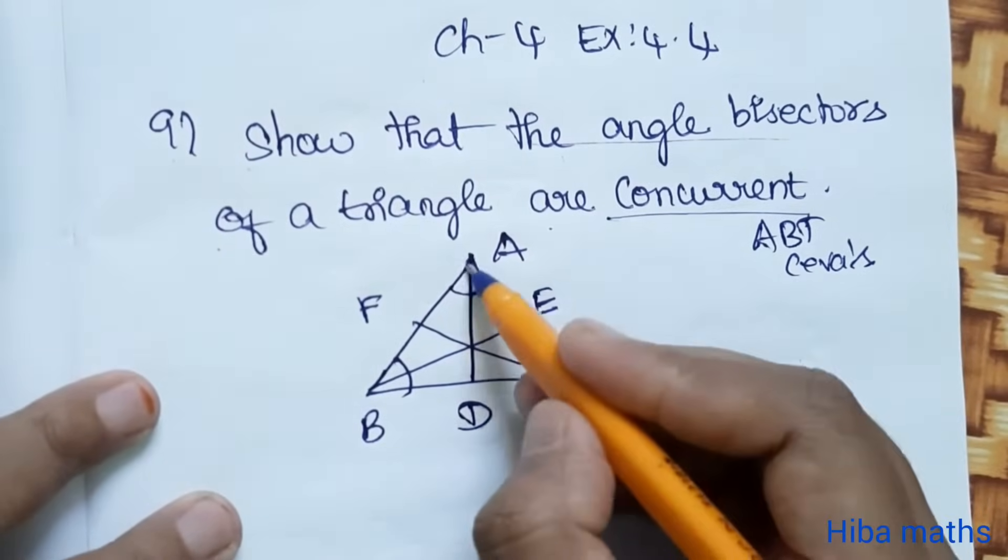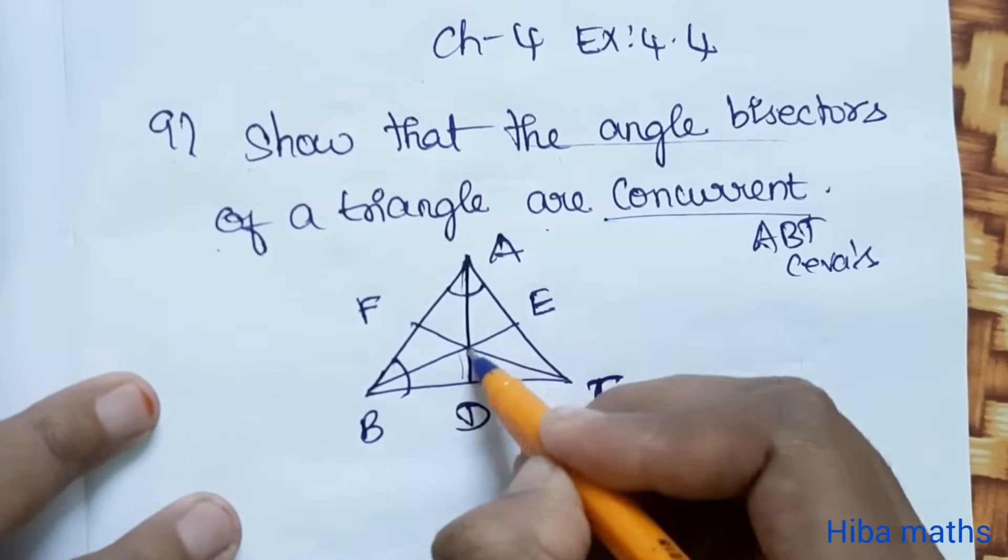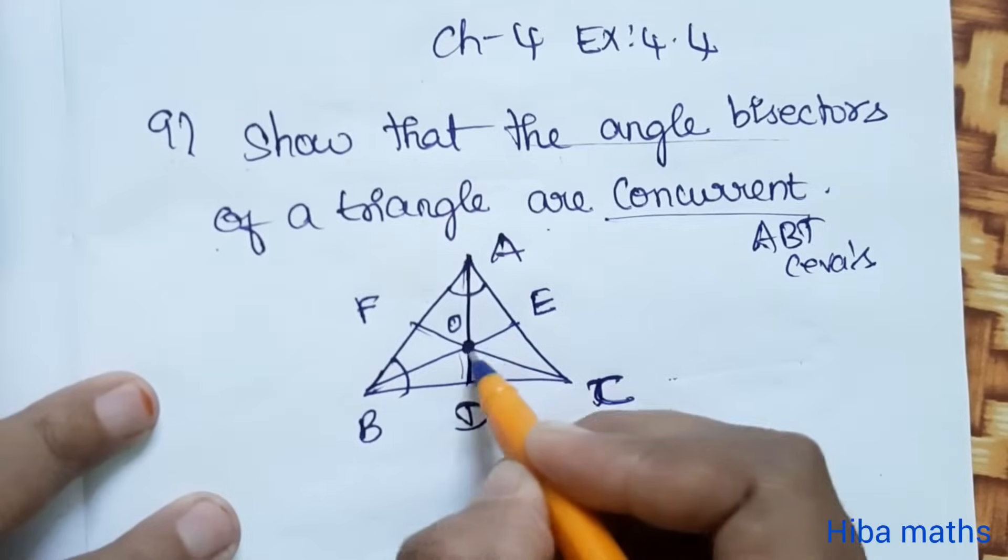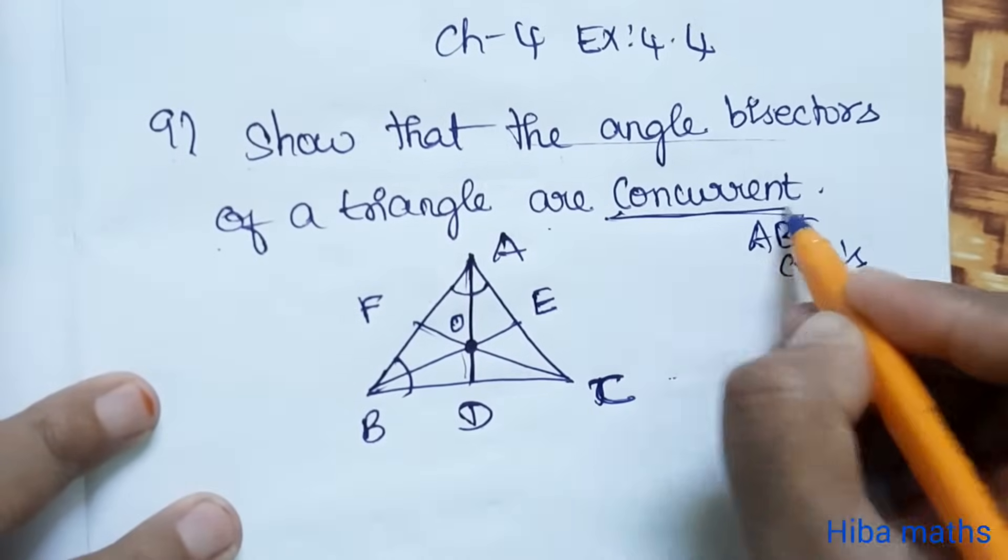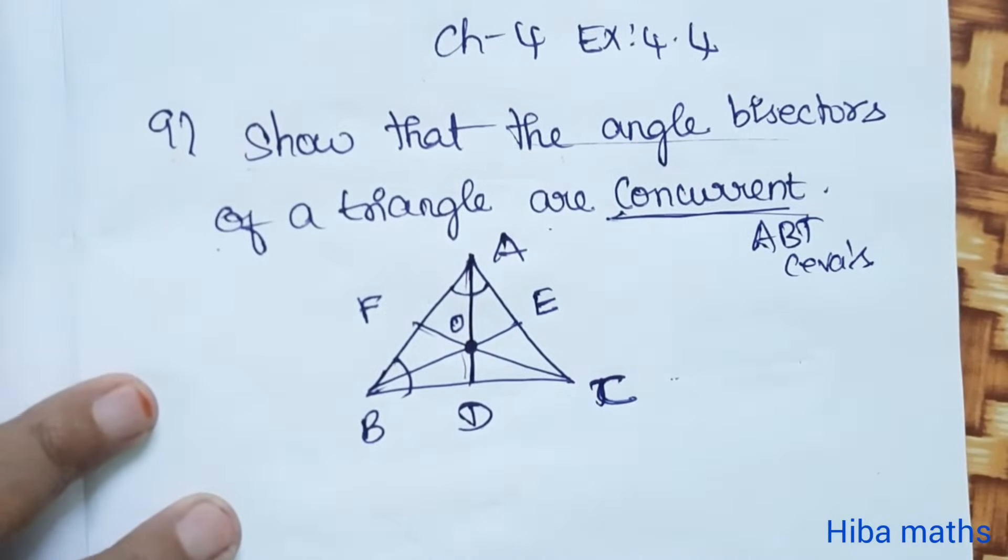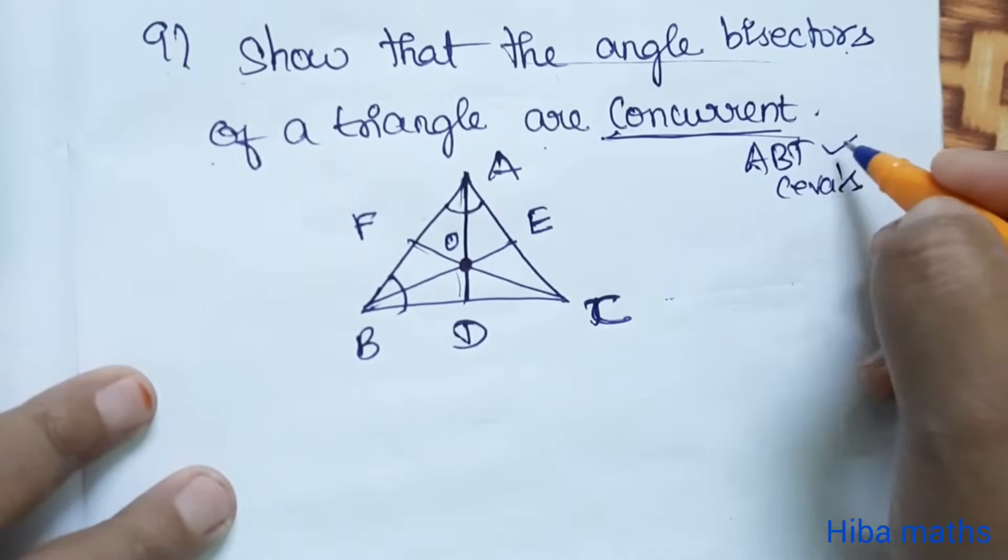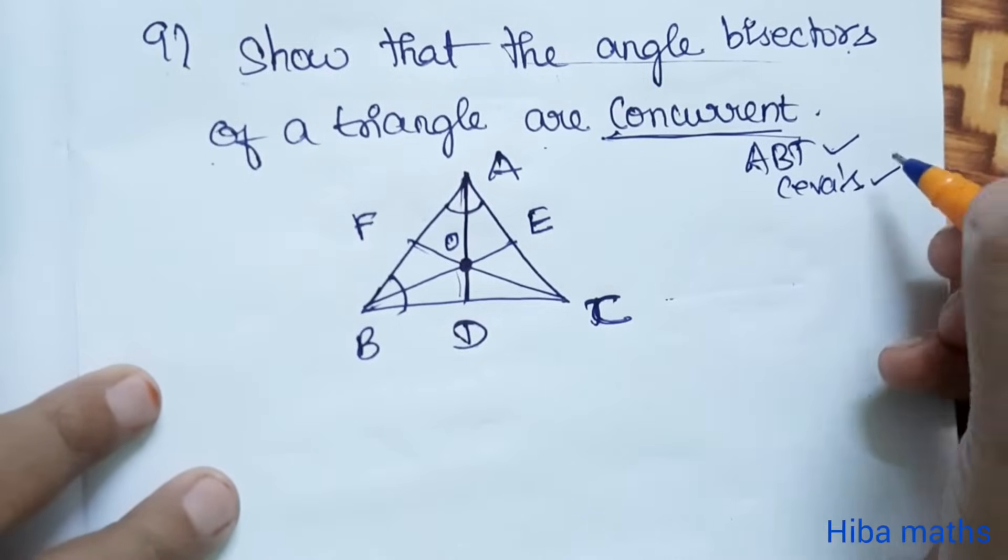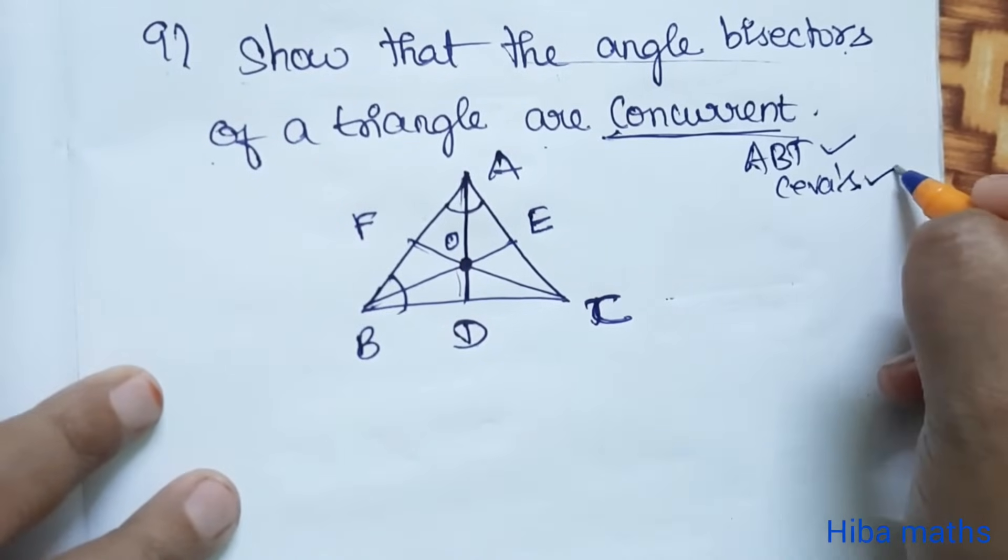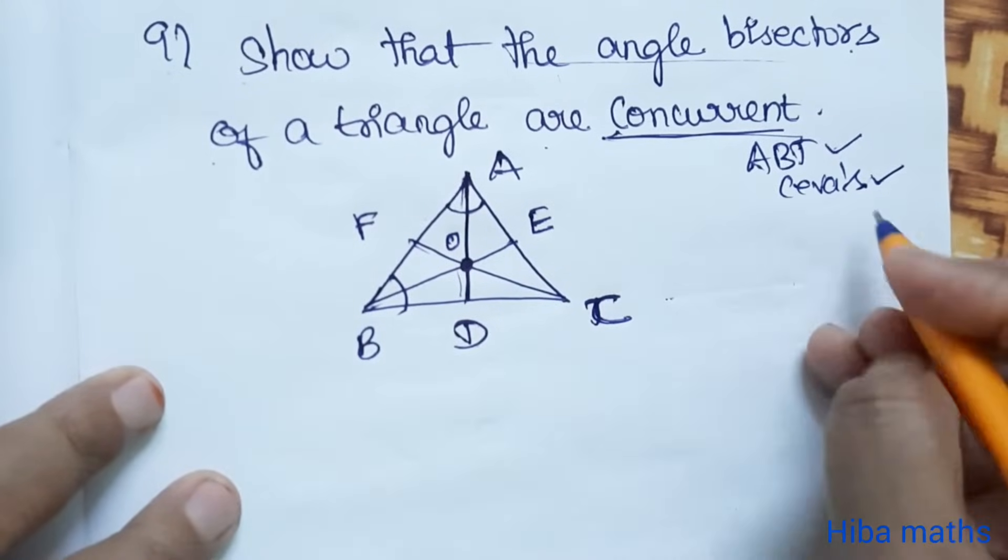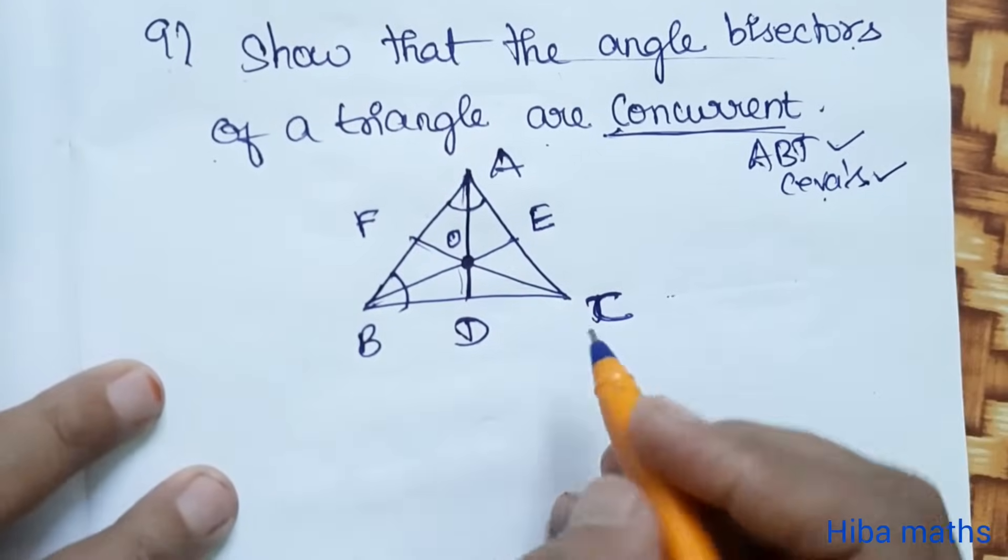The angle bisectors meet at one point O. It is concurrent. We will prove it. If we prove angle bisector theorem and Ceva's theorem, it is concurrent.